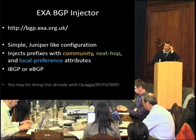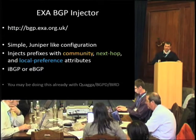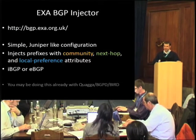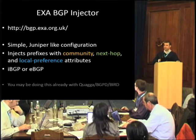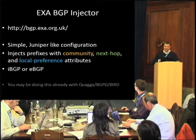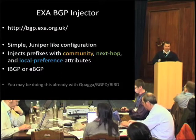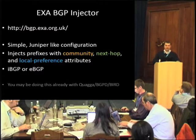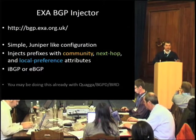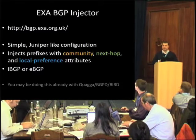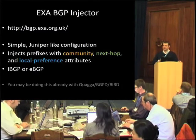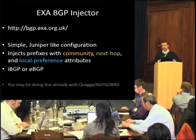The particular route injector I'll talk about was written by Thomas at EXA. It's got a very simple Juniper-like configuration, so if you use Juniper routers right now, you already know enough to use the software. It can inject prefixes with your own arbitrary communities, next hops, and local preferences, so if you're familiar with the BGP toolset, you'll be very familiar with that software. You can set up IBGP or EBGP peering, so you can make the routes you inject look like they're coming from outside or within your network.